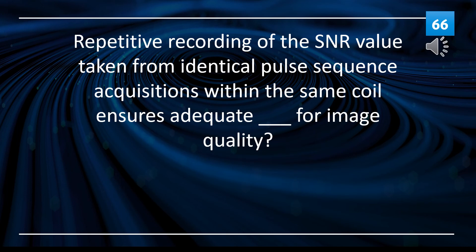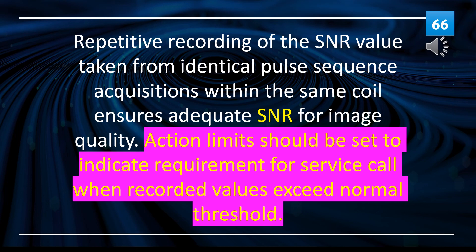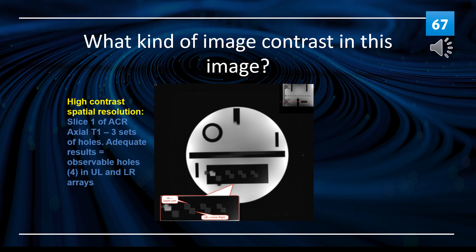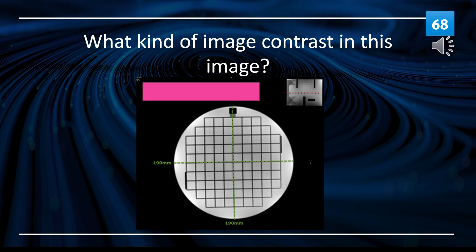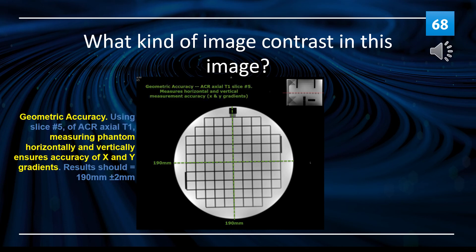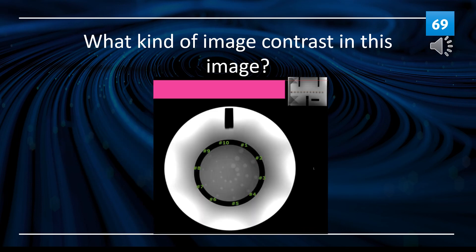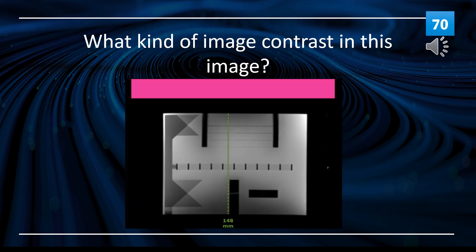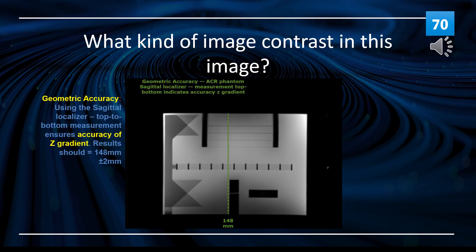Repetitive recording of the SNR value taken from identical pulse sequence acquisitions within the same coil ensures adequate SNR for image quality. High contrast spatial resolution, geometric accuracy (measuring phantom horizontally and vertically ensures accuracy of X and Y gradients), and low contrast spatial resolution (10 detectable spokes) are key image quality metrics. Geometric accuracy top-to-bottom measurement ensures accuracy of the Z gradient.